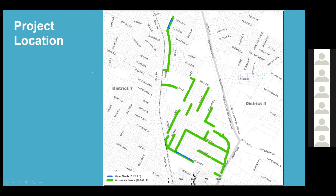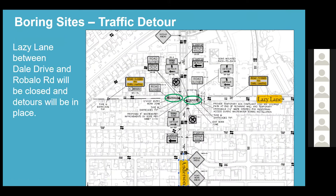On this slide you'll see the project location. The green lines represent where the wastewater needs are - approximately 16,089 linear feet of wastewater lines - and the water lines that are going to be replaced. This next slide shows the places where there will be some boring sites and traffic detours, with the project between Lazy Lane, between Dell Drive and Robolo Road - those will be closed and detours will be in place. Mr. Diego, would you like to go over any of those?